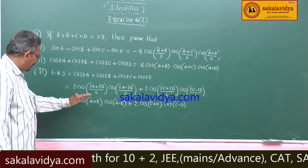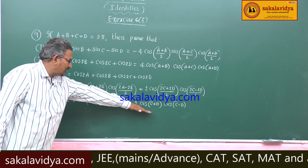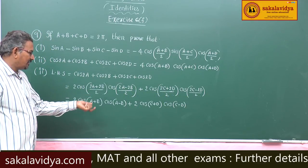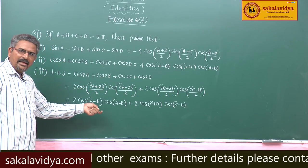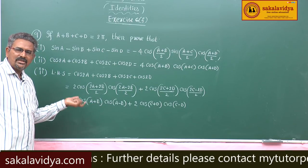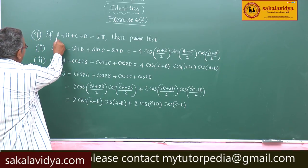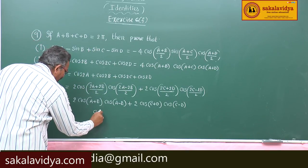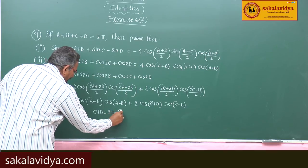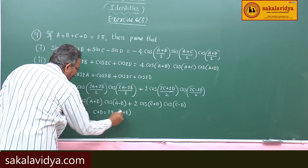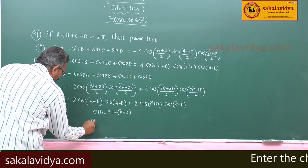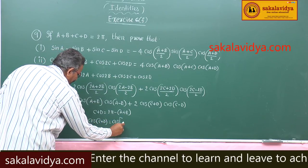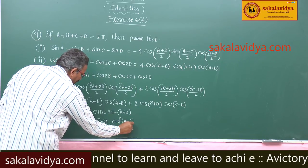Now let us change cos(C+D) in terms of cos(A+B). That means cos(C+D) in terms of angle A and angle B — we have to change the sum of the two angles using the given condition. So C+D equals 360° minus (A+B).